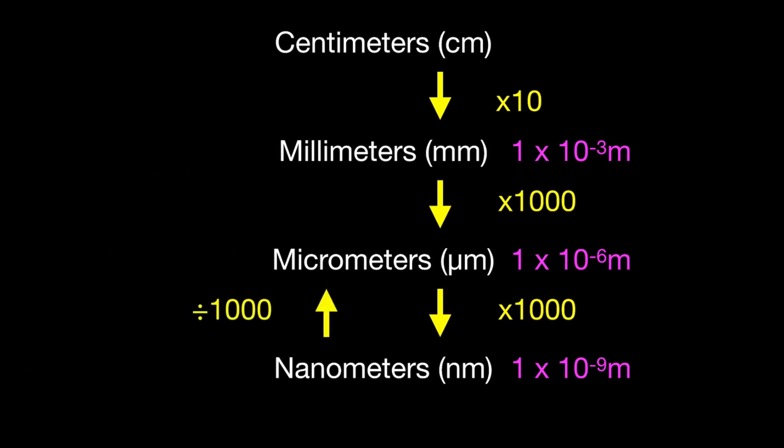Of course, we can also convert the other way. If you calculate your answer in nanometers but the question asks for micrometers, divide by 1000. From micrometers to millimeters, divide by 1000 again. And if you need to go from millimeters to centimeters, divide by 10.